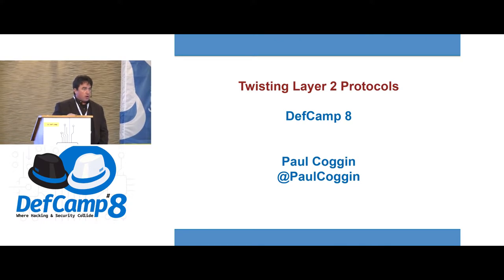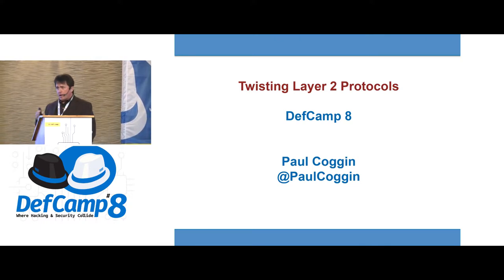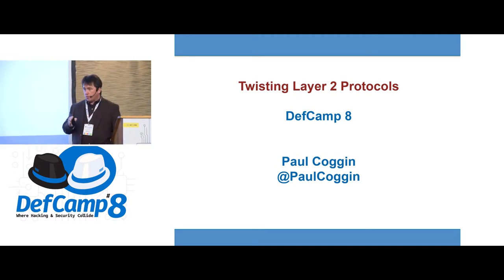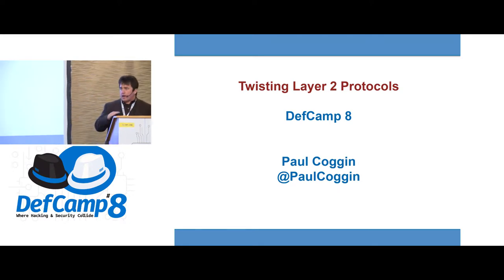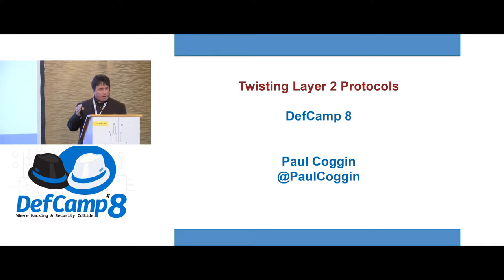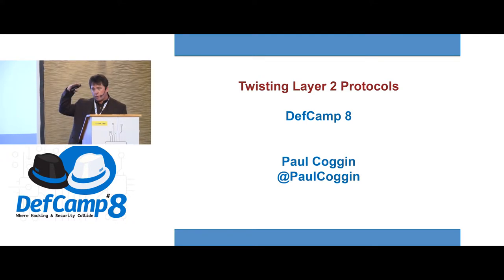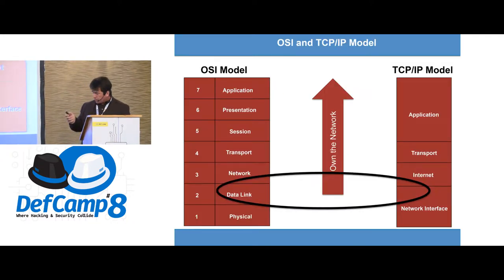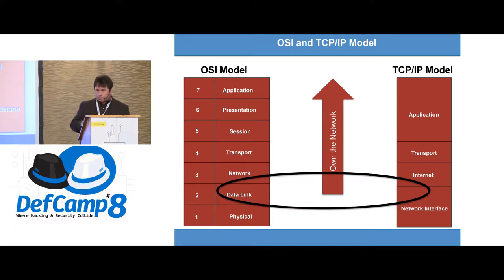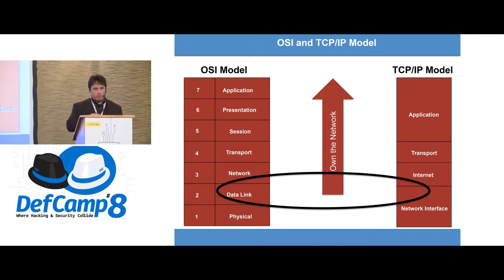Today we're going to focus on Layer 2 protocols that I see in consulting engagements that are often being missed by network auditors, penetration testers, and vulnerability assessments. I consider this low-hanging fruit during security assessments that is totally overlooked because everyone's focused on the higher layers of networking. I want to encourage you, if you're involved in doing security assessments, to not overlook those lower layers of the OSI stack.